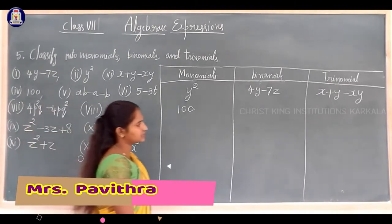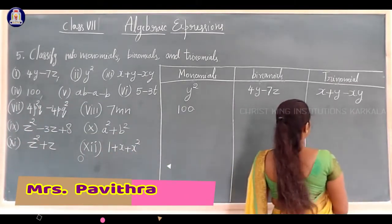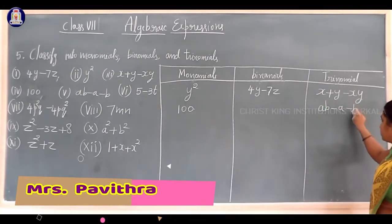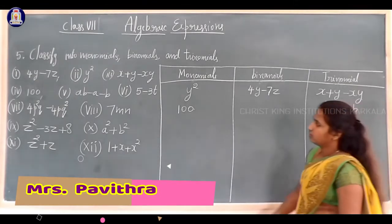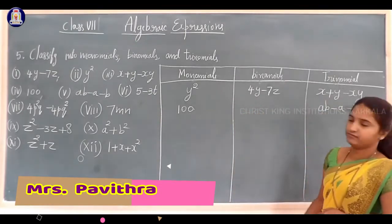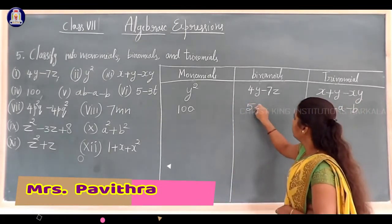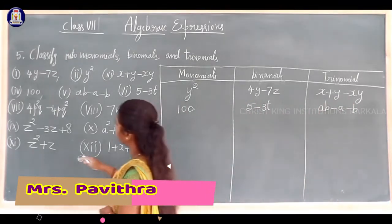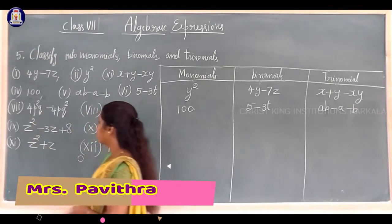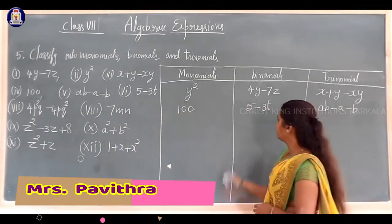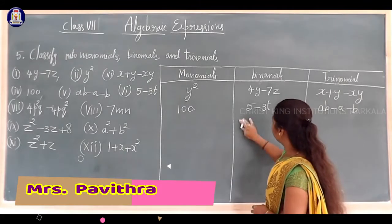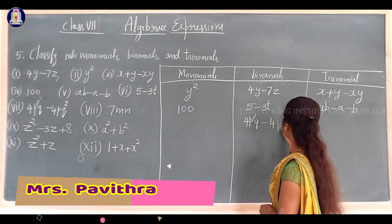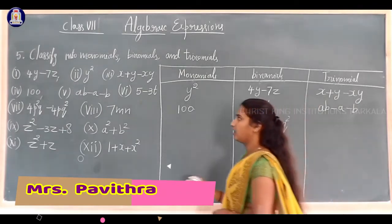The fifth expression is ab minus a minus b, which has three terms, so it is a trinomial. The sixth expression, 5 minus 3t, is a binomial. The seventh expression, 4p squared q minus 4pq squared, is also a binomial — two terms.